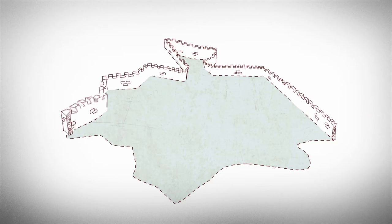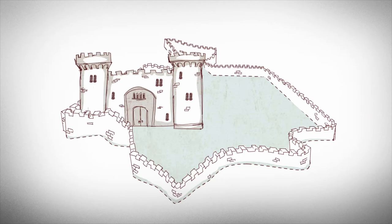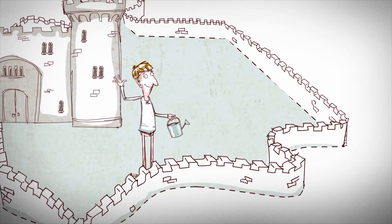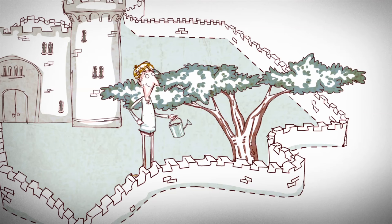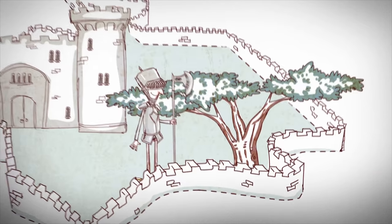We are used to thinking of a state's sovereignty on the model of a castle. On this model, the citizens of the state make decisions, through their representatives, that impact their own lives, their rights, duties, property, and so on.